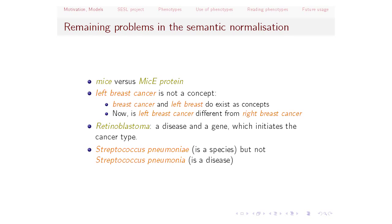Another question is typical ambiguity: retinoblastoma is both a disease and a gene. In some occasions it makes a difference whether this is the disease or the gene. And here's a very special example: 'Streptococcus pulmoniae' is a species, and 'Streptococcus pulmoniae' is also a disease — a small morphological variance.